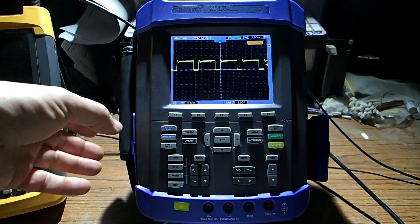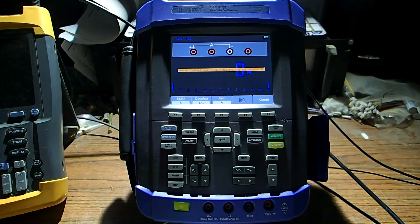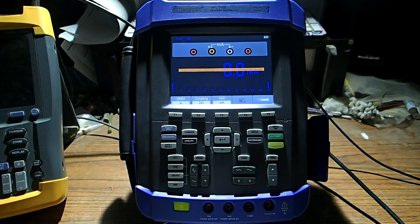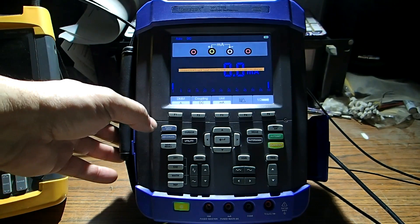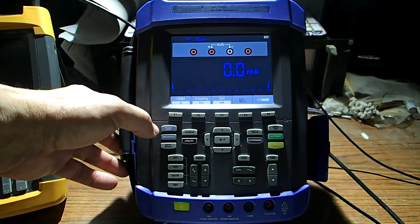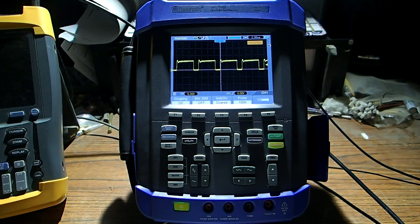It also has a DVM mode. Scope or DVM. I don't use a digital volt meter usually on the scopes but it's handy if you're out in the field and you need to look at some voltage real quick. Press it again to go back to scope.